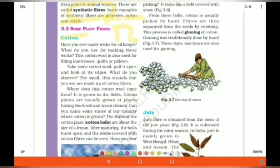The first one is cotton. Have you ever seen make wicks for oil lamps? They are made up of cotton. What is cotton? It's a type of fiber. Take some cotton wool, put it apart and look at its edges. The small thin strands that you see are cotton fibers.